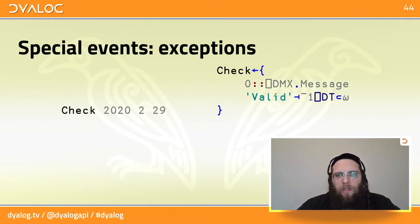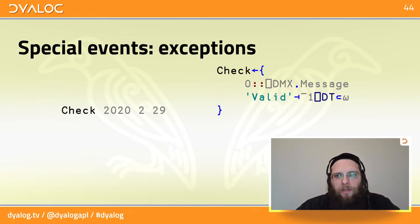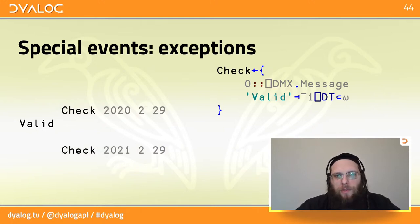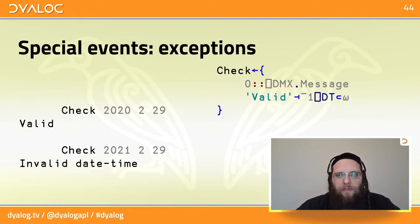Let's try it. February 29th of 2020 — that was a leap year — so we get 'valid'. However, February 29th of 2021 would throw an error, and we get the QuadDMX message: 'invalid date time'.